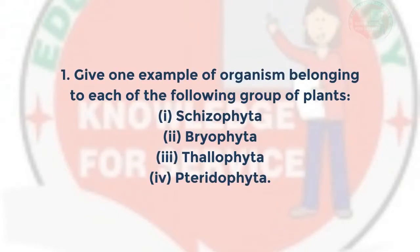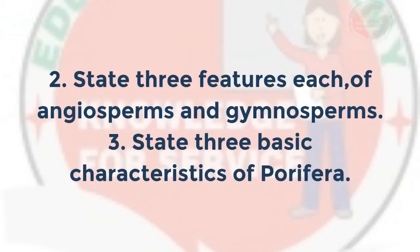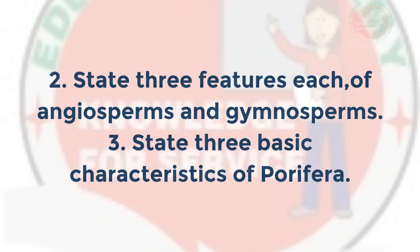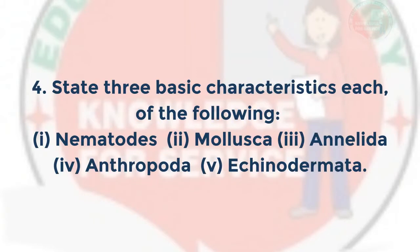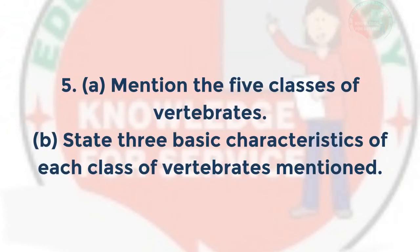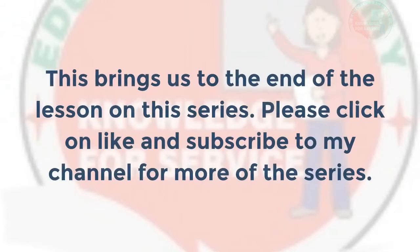Now do the following exercises: 1. Give one example of an organism belonging to each of the following groups of plants: i. Schizophyta, ii. Bryophyta, iii. Thallophyta, iv. Pteridophyta. 2. State three features each of angiosperms and gymnosperms. 3. State three basic characteristics of Porifera. 4. State three basic characteristics each of: i. vertebrates, ii. Mollusca, iii. Annelida, iv. Arthropoda, v. Echinodermata. 5a. Mention the five classes of vertebrates. 5b. State three basic characteristics of each class of vertebrates mentioned.